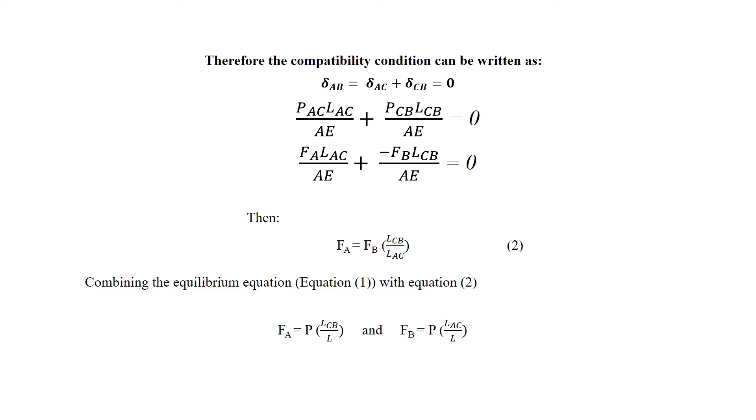Combining equation 1 with equation 2, the equations for the reactions are FA equals 16kN and FB equals 24kN.